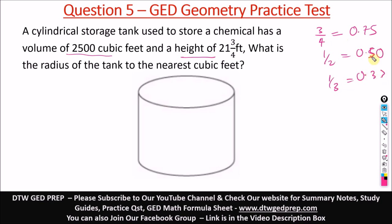So note this easy conversion from fraction to decimal. So from here, now you see we're giving the volume, we're giving the height, and we're told to find the radius of the tank. That's what we're told to find. The height is 21.75. We're told to find the radius. The volume is 2500 cubic feet.